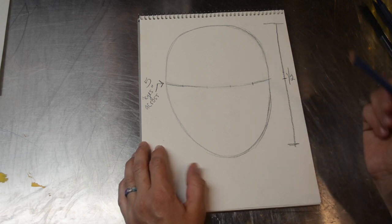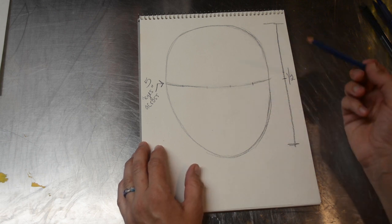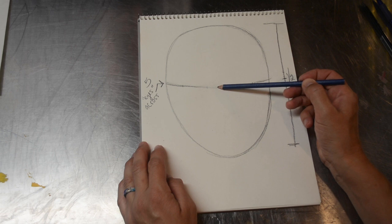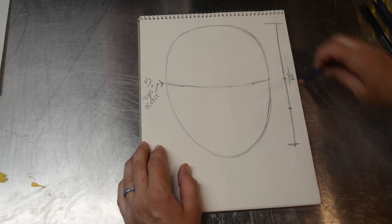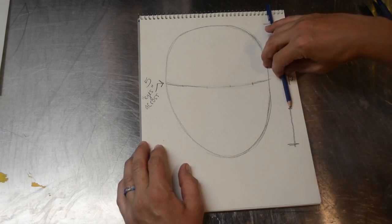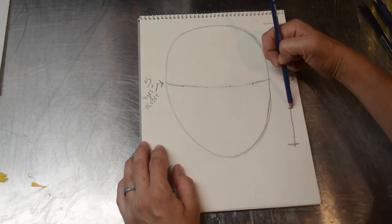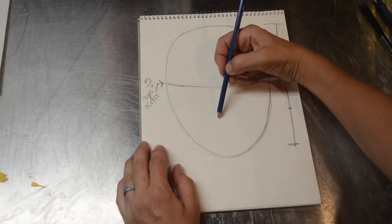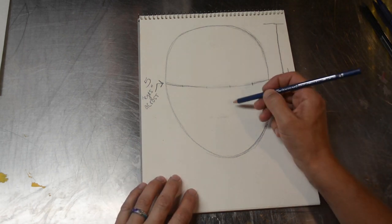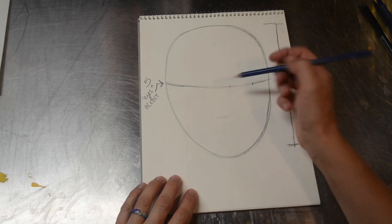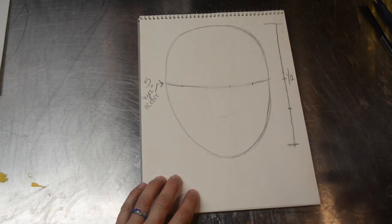The next thing we're going to do is determine where the lowest part of the nose will go. And that is again, halfway between the eye line and the chin. So about there is the lowest part of the nose. And then that would be the outside. Very light guidelines so I can erase them later.